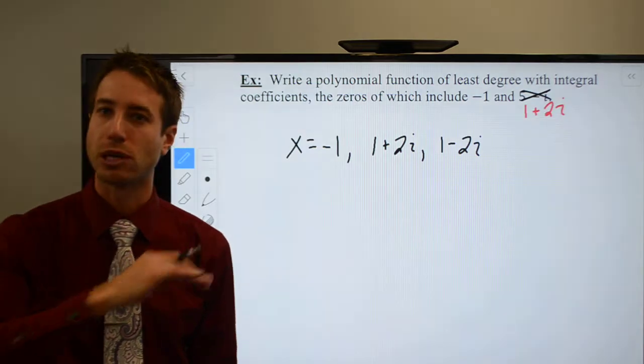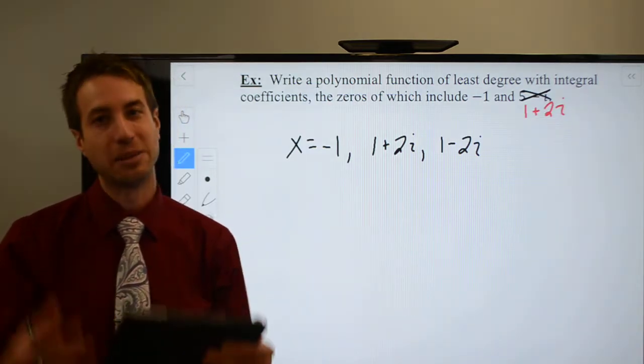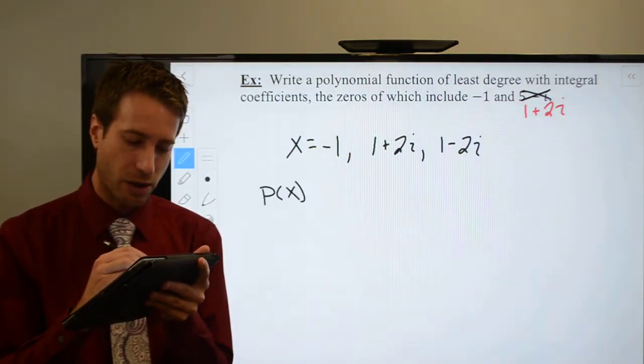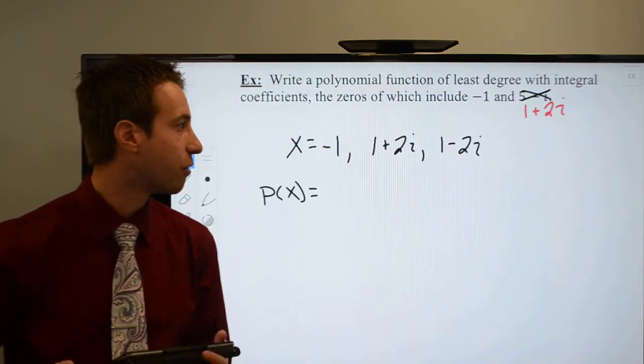Remember, the i's should completely drop out. If the i's don't go away, you made a mistake. So here we go. Again, we're going to call it p of x because we're finding a polynomial, and I can name it whatever I want to. Feel free to name it after yourself if you want.